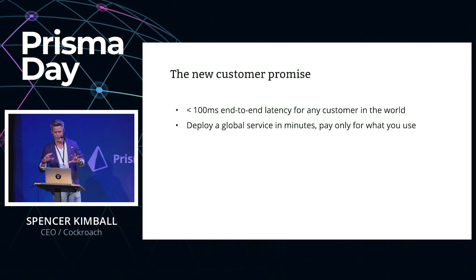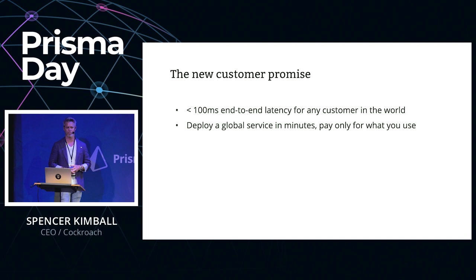So what does that mean for the new customer promise? If you can build this kind of global service, you're delivering the ability to do less than 100 millisecond end-to-end latency for any customer in the world — because LTE basically costs you about 100 milliseconds already. For operators, you're talking about deploying a global service in minutes: give us the code, we'll deploy it globally, scale it, and the service will be available to your users with incredibly attractive end-to-end latency. And both for the data tier and the logic tier, you pay only for what you use. This is a 10x evolutionary improvement.